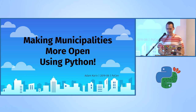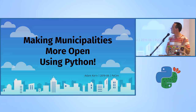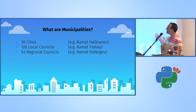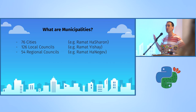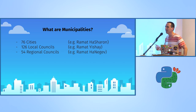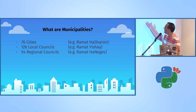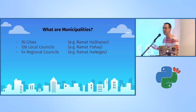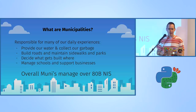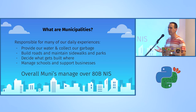Making municipalities more open using Python. First, let's talk about what municipalities are. In Israel we have municipalities — 76 cities like Ramat HaSharon, which are big municipalities. In Hebrew they're called Rashiot Mekomiot. We have local councils, Motsote Mekomiot, for example Ramat Yishai, and 54 regional councils like Ramat HaNegev, the biggest one. They are very different from one another.